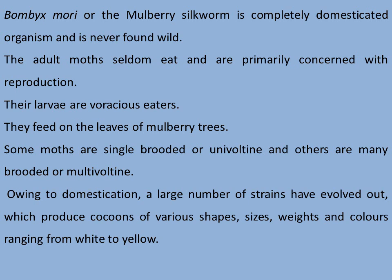The adult moths seldom eat and are primarily concerned with reproduction, while their larvae are voracious eaters that feed on the leaves of mulberry trees. Some moths are single-brooded, termed univoltine species, and others are many-brooded, termed multivoltine. Owing to domestication, a large number of strains have evolved that produce cocoons of various shapes, sizes, weights, and colors ranging from white to yellow.